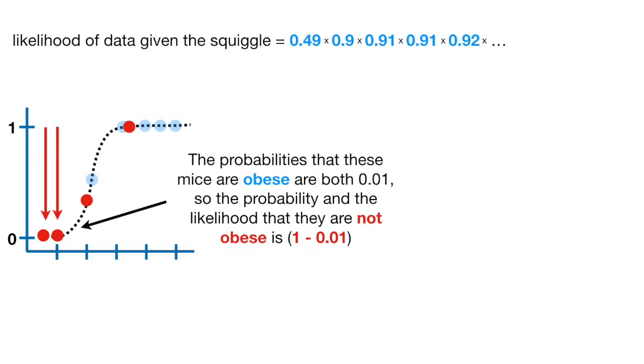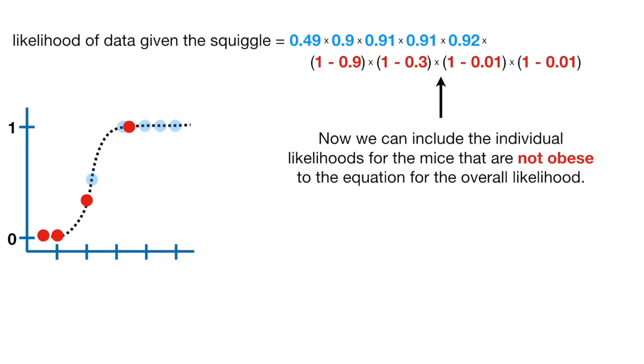The probabilities that these mice are obese are both 0.01, so the probability and the likelihood that they are not obese is (1 - 0.01). Now we can include the individual likelihoods for the mice that are not obese to the equation for the overall likelihood.